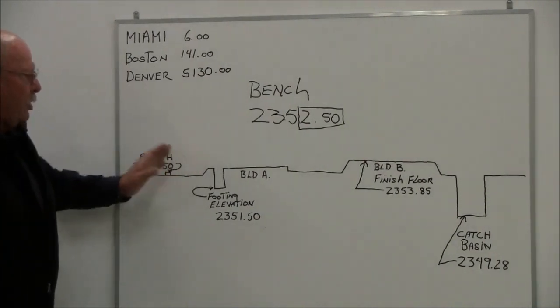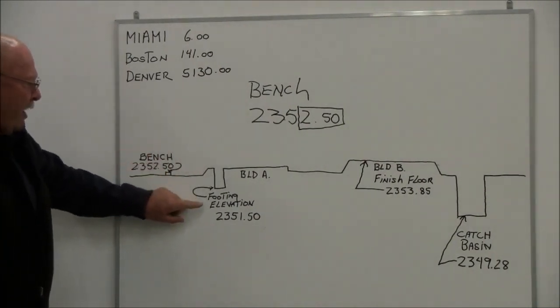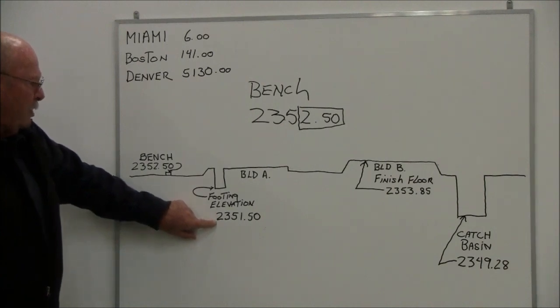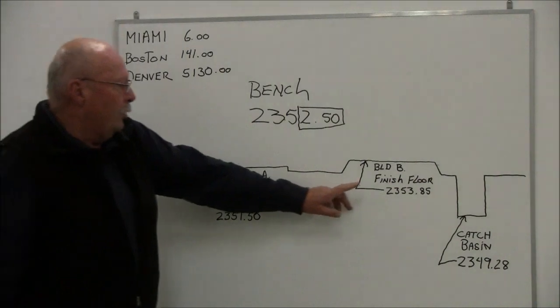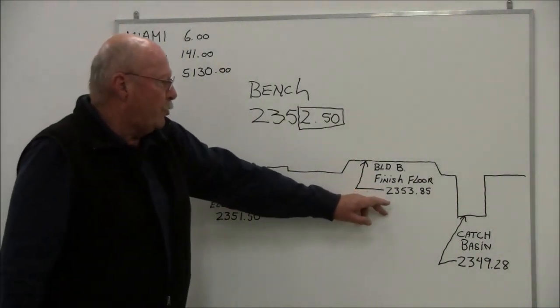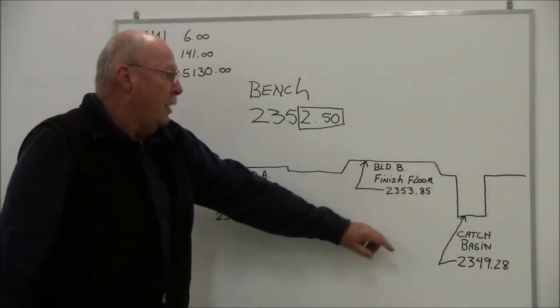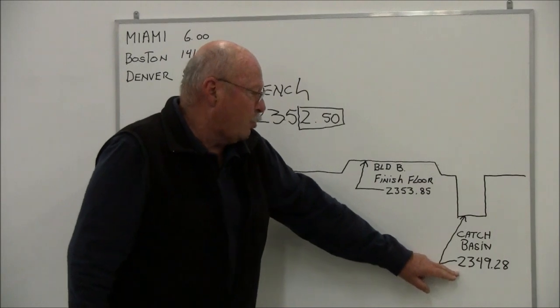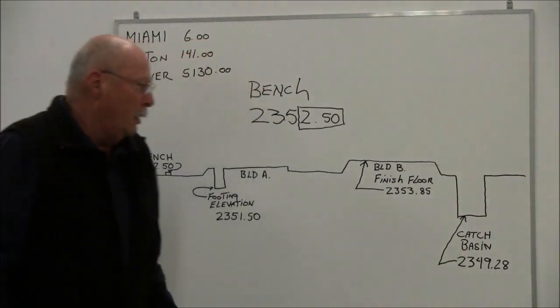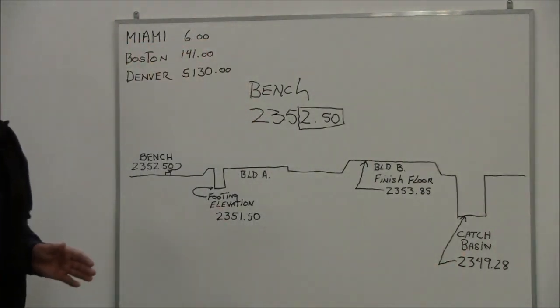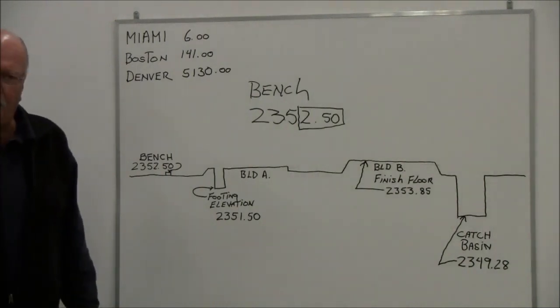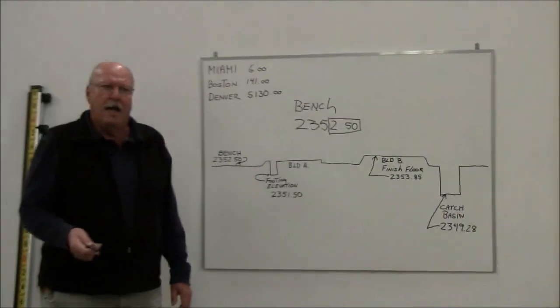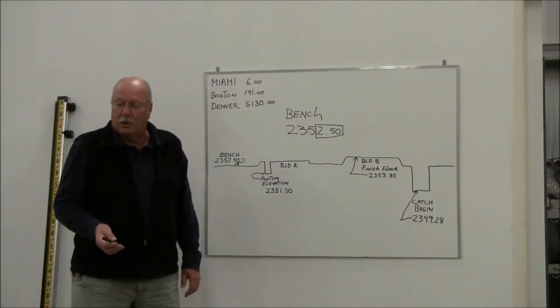So what we're really going to be looking at is 250 on our grade rod, which is going to represent 2352.50. So for example, on this particular illustration, if I have a footing elevation, it might be depicted as 2351.50. I might have a building finished floor at 2353.85, and in this case I've got a catch basin of 2349.28. So what's nice, what we're going to do is we're going to show you how the direct reading rod works and how simple it is.